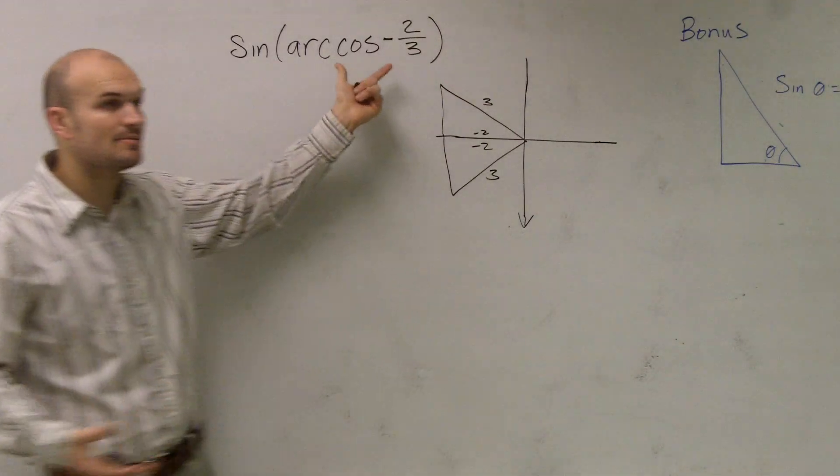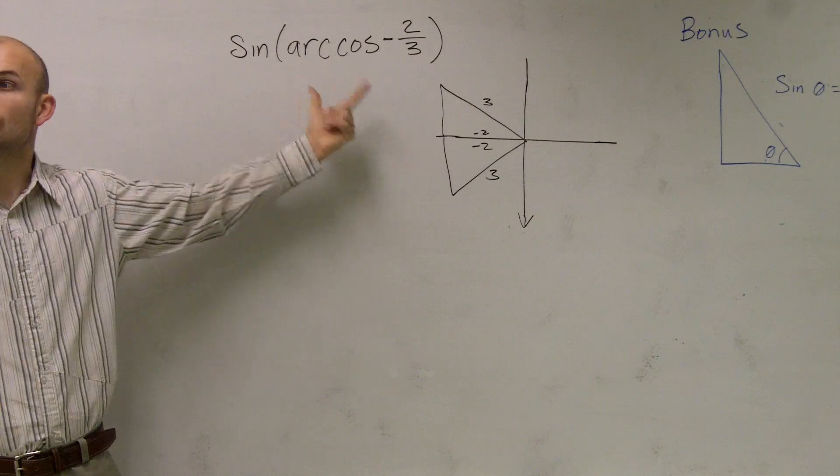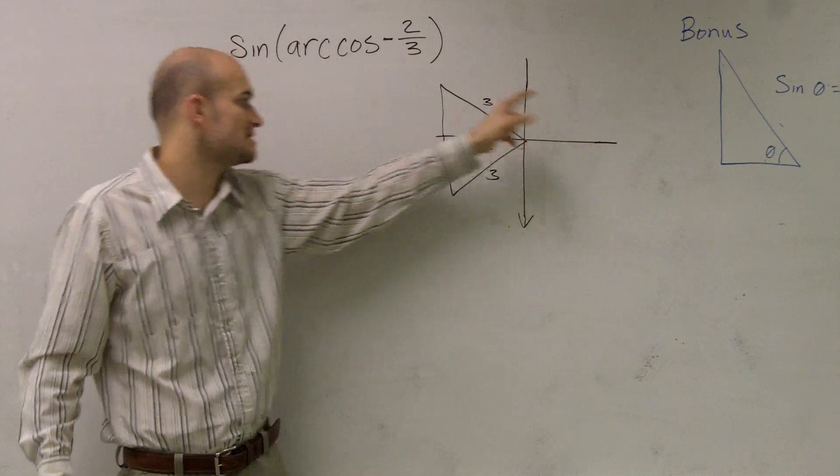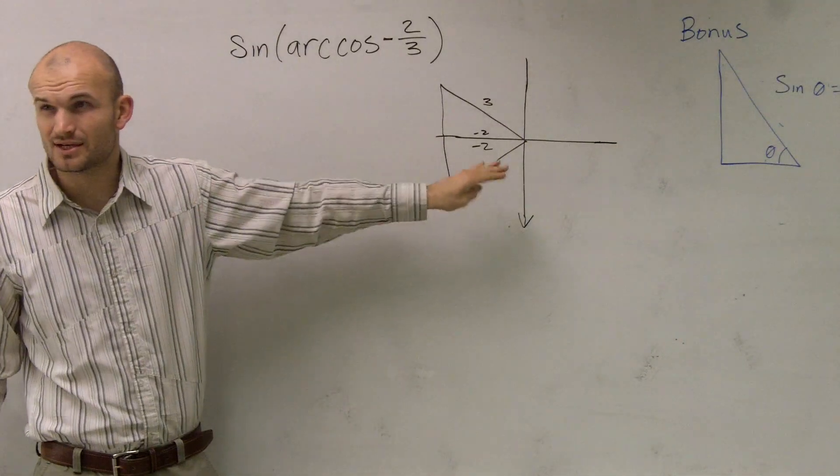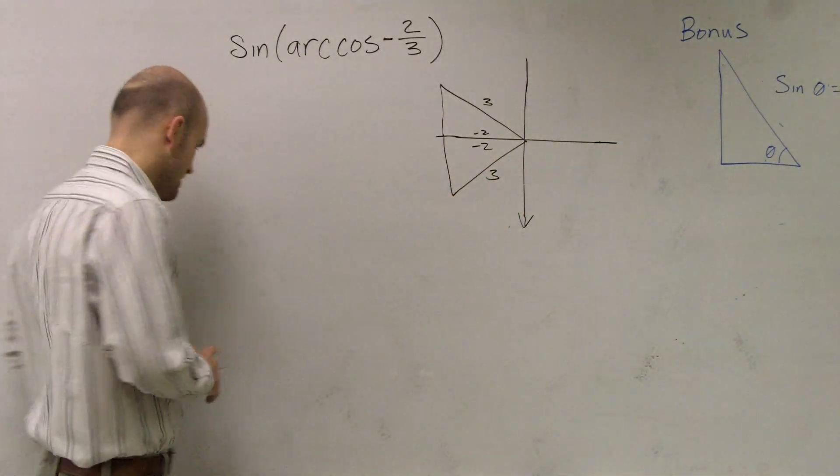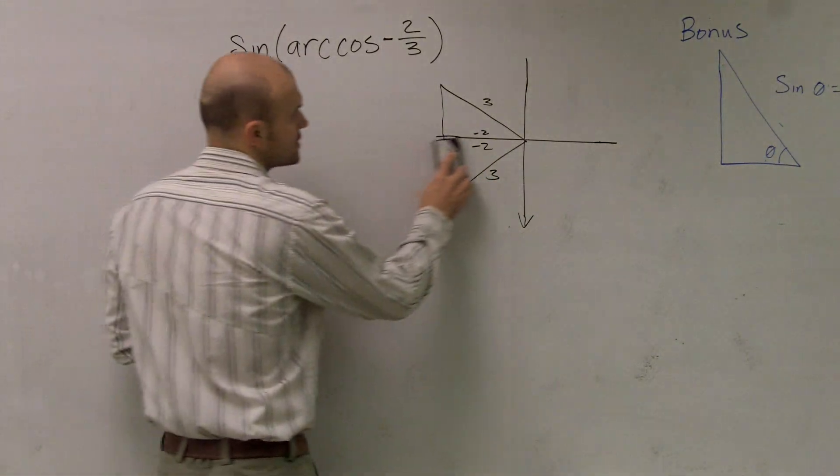However, when we're thinking about using the inverse, we need to remember that cosine, the inverse is between zero and π. Therefore, this triangle is not going to work. Do you guys see that? Do you guys see all the restrictions for your inverse? So this helps you determine which triangle to use.